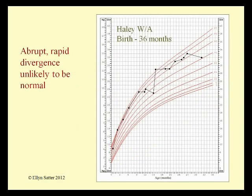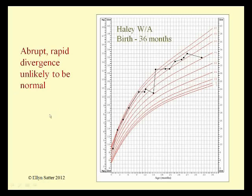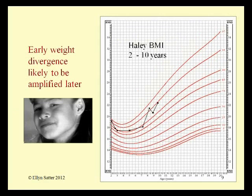However, an abrupt and rapid growth divergence is unlikely to be normal. After some catch-up growth early on, when Haley's weight dipped up from the 75th to about the 95th percentile, she stabilized at around the 95th percentile for about eight months before it became inconsistent. So she amply demonstrated her ability to regulate food intake before it became inconsistent. We need to ask: what happened? What created this growth divergence? It doesn't come out of thin air. We're asking what introduced so much static in feeding that Haley lost her ability to regulate food intake.